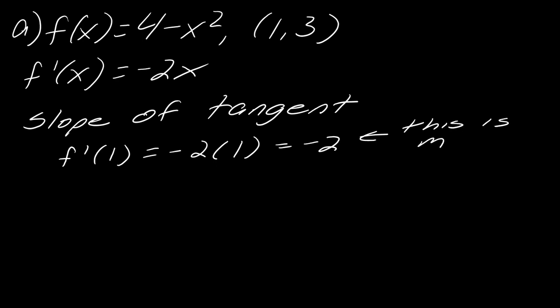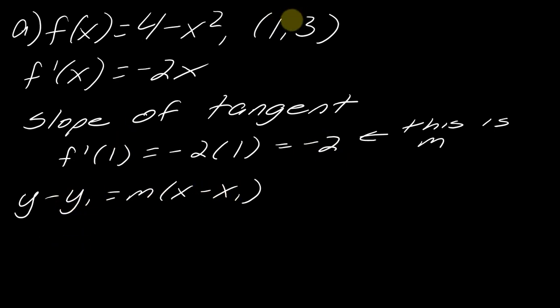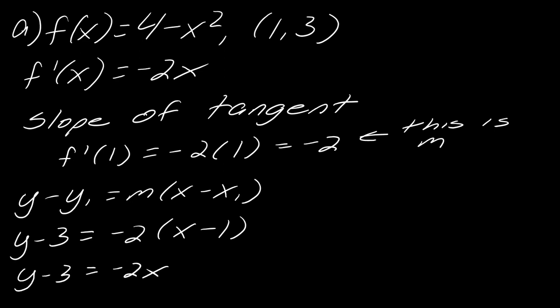For a line, you need a slope m and a point. I'm going to use the point-slope formula. My slope is m = -2, and my point is (1, 3), so x₁ = 1, y₁ = 3. Plugging everything in and converting to slope-intercept form gives negative 2x plus 2, so the tangent line is y = -2x + 5. We've got both our derivative and our tangent line at the given point.